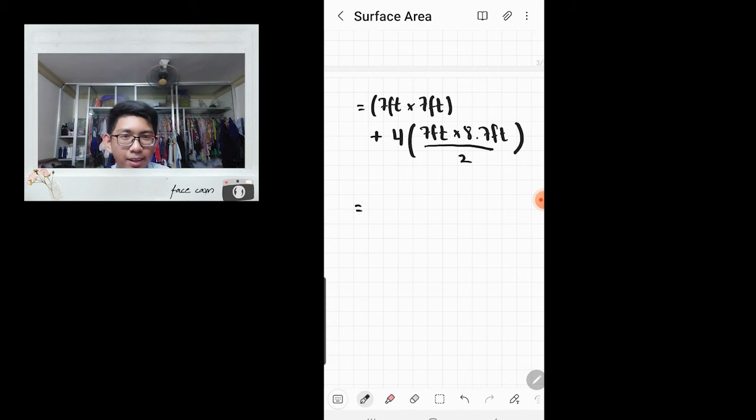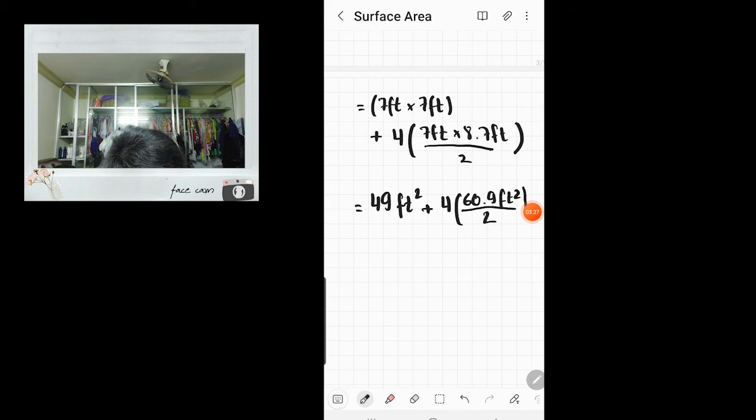Let's start our calculation. 7 times 7 is 49 feet square plus 4 times. So 7 times 8.7 is 60.9, don't forget our unit which is feet square, and divide by 2. So now, 60.9 divided by 2 is 30.45.